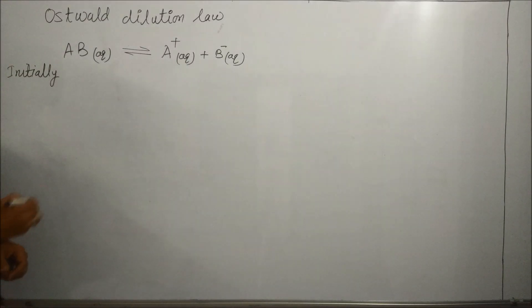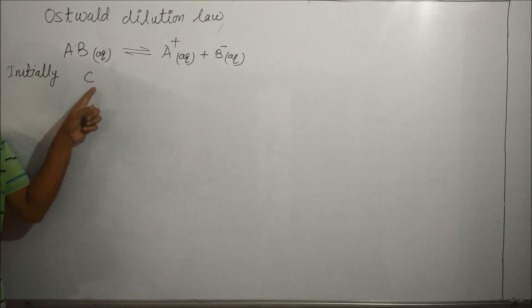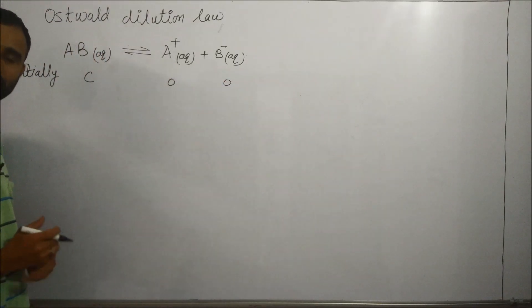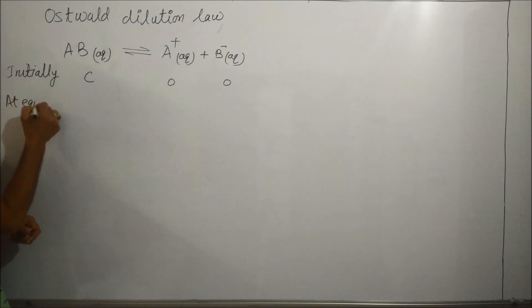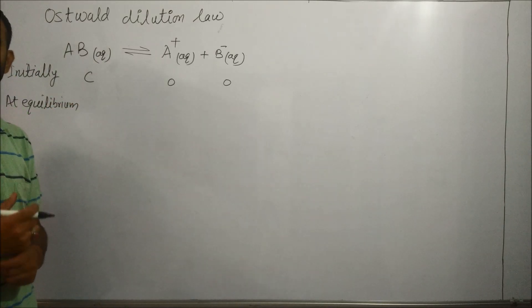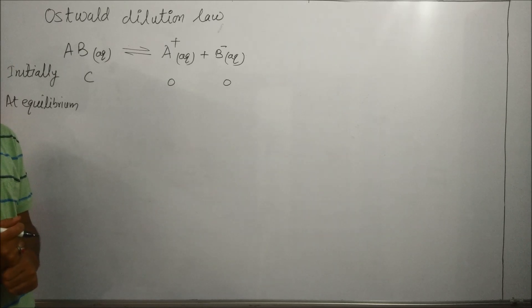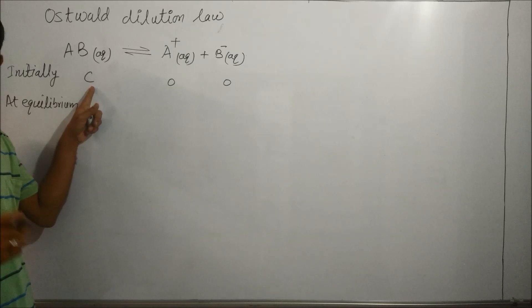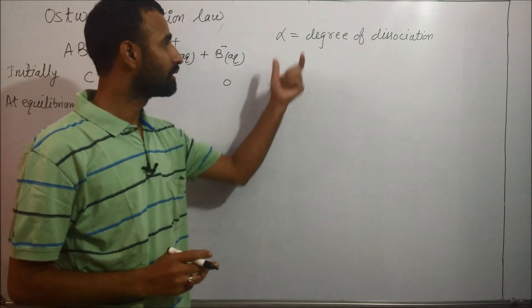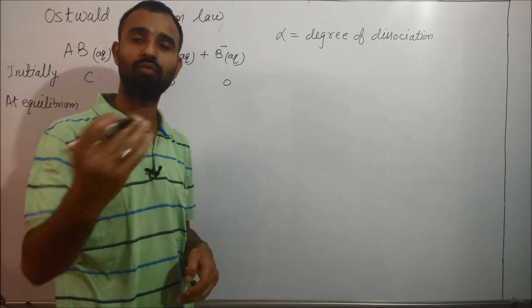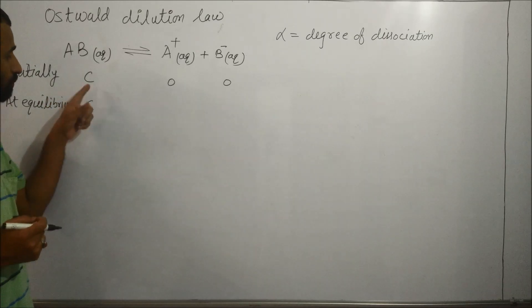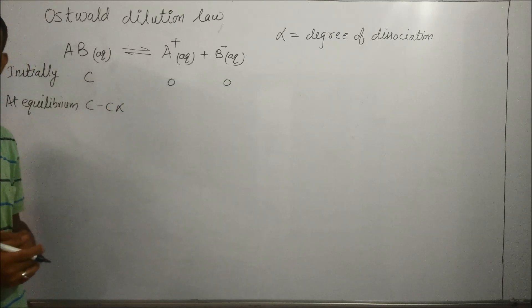Initially, let us start with concentration C. That means the products are zero in the beginning of the reaction. At equilibrium, let alpha be the degree of dissociation, and C is the molar concentration of the salt. Out of C, C alpha is dissociated.